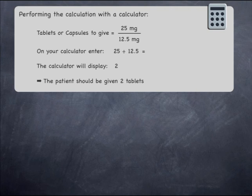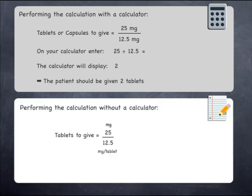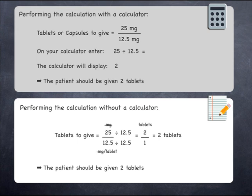To perform the calculation without a calculator, you can start by cancelling the units of milligrams on the bottom and top, which leaves a final unit of tablets. A handy piece of information to remember is that 25 is divisible by 12.5. As such, you can divide both 25 and 12.5 by 12.5, which will give 2 over 1, which is 2. The patient should be given 2 tablets.